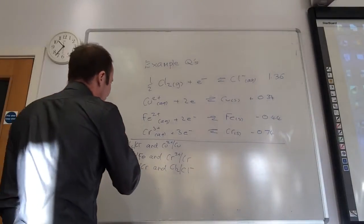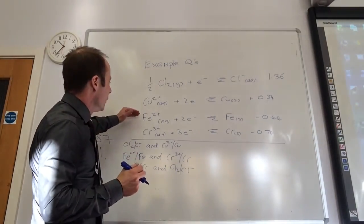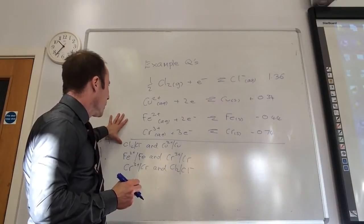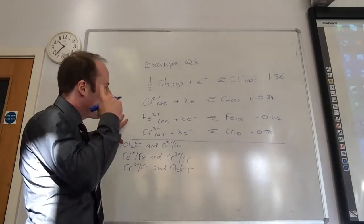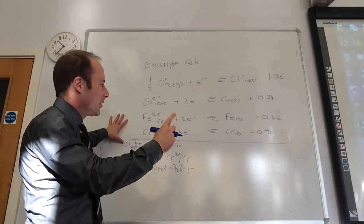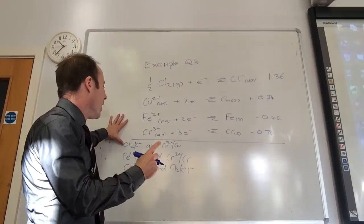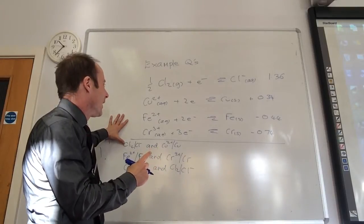So for the first one, they've given us four standard electric potentials. The first question they're asking me is to calculate the voltage, which is quite easy, and then to calculate what reaction will actually take place.